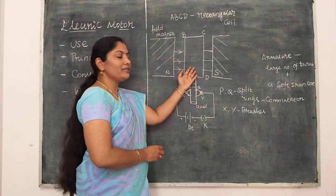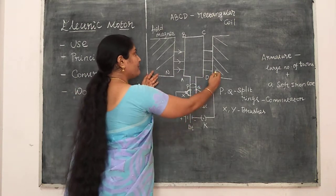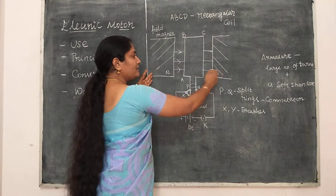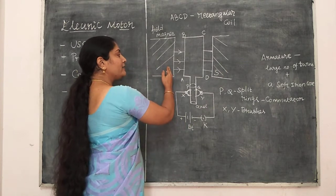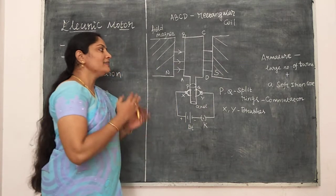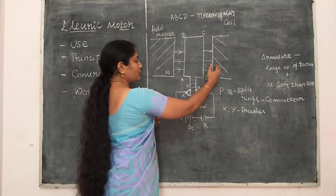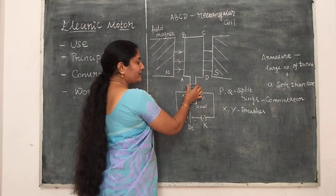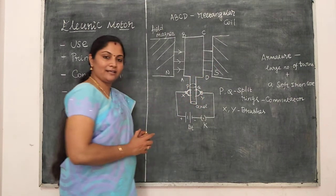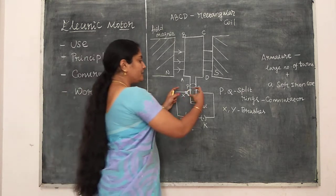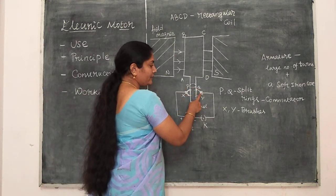That coil is kept inside the field magnets. These two are field magnets. The field magnets produce a magnetic field that acts from north to south. The ends of the rectangular coil are connected with an axle. The axle is connected with the split rings.